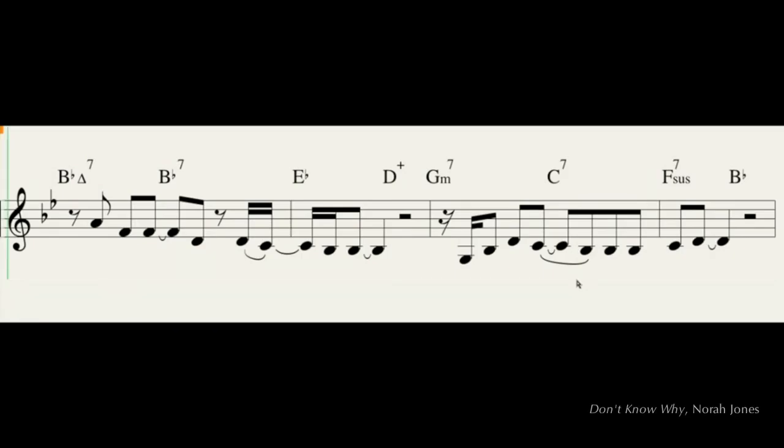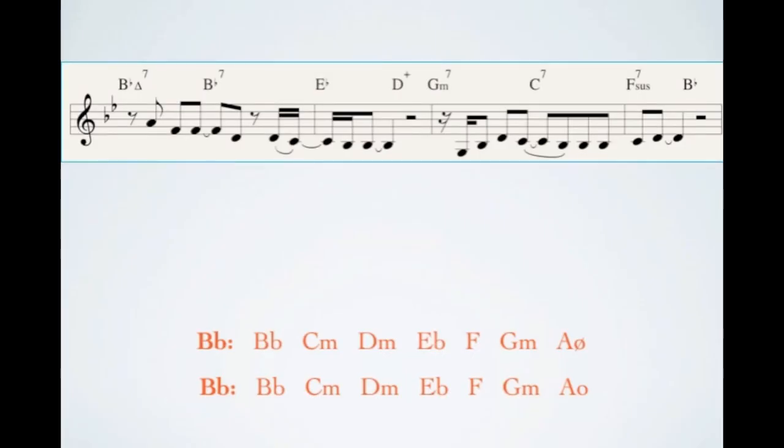Our third example will be back in B flat major. So, here's again our set of diatonic chords in B flat major. So, listen carefully to this next example. The chromatic chords are a little bit more subtle than the previous examples.